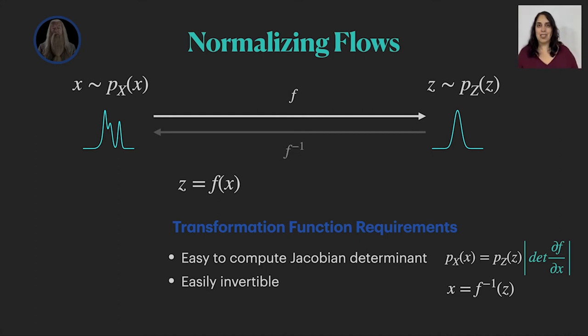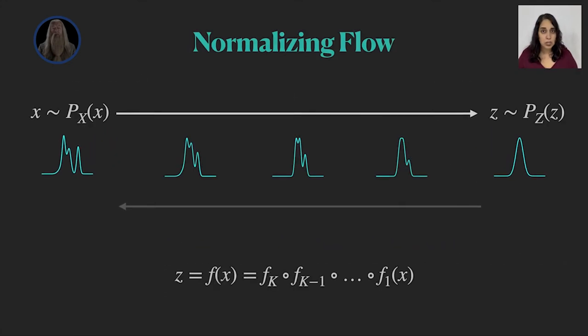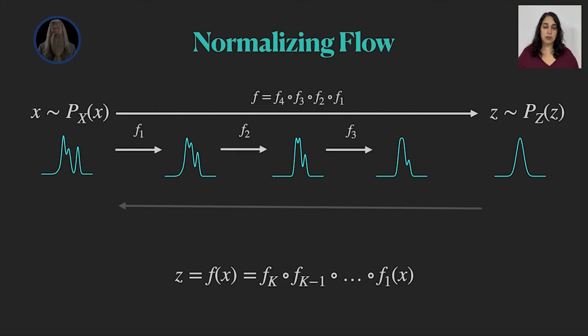And this is where we use the last piece of normalizing flows. A flow is not a single function. It is actually a composition of functions that gradually transforms the complex distribution into a simple one, one function at a time. And the nice thing about composition is that the inverse function is actually a composition of each of the inverse functions. So we can use simpler functions that hold these conditions. The flow would hold them as well. But the fact that we are composing functions will generate the complex distribution that we need.